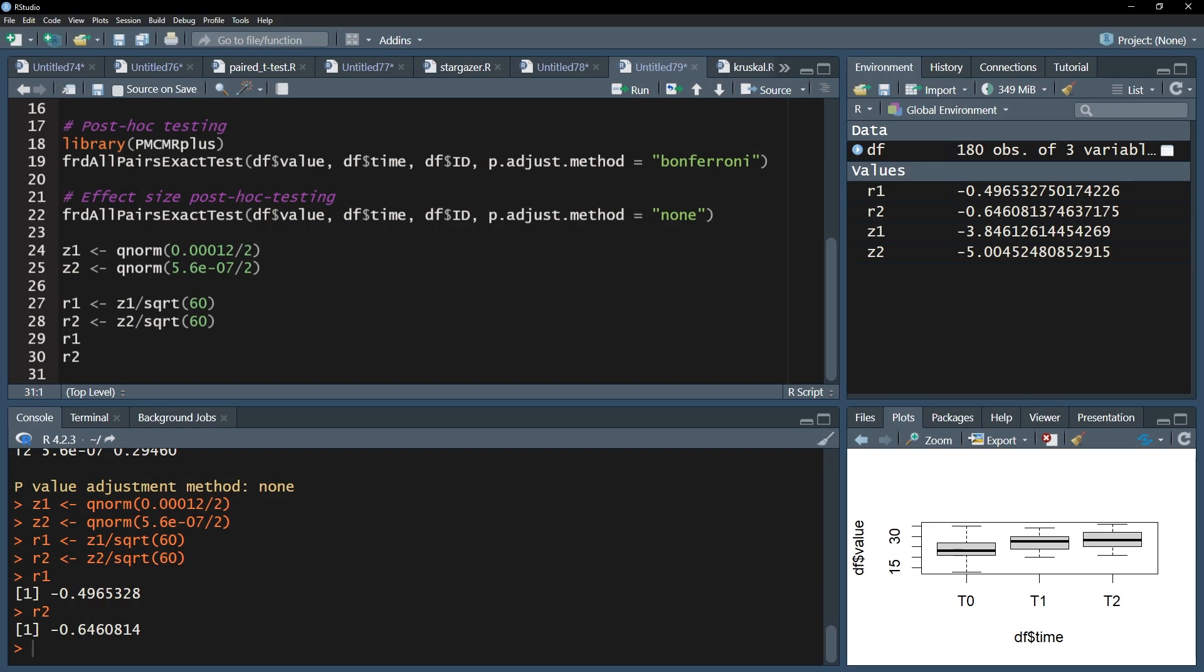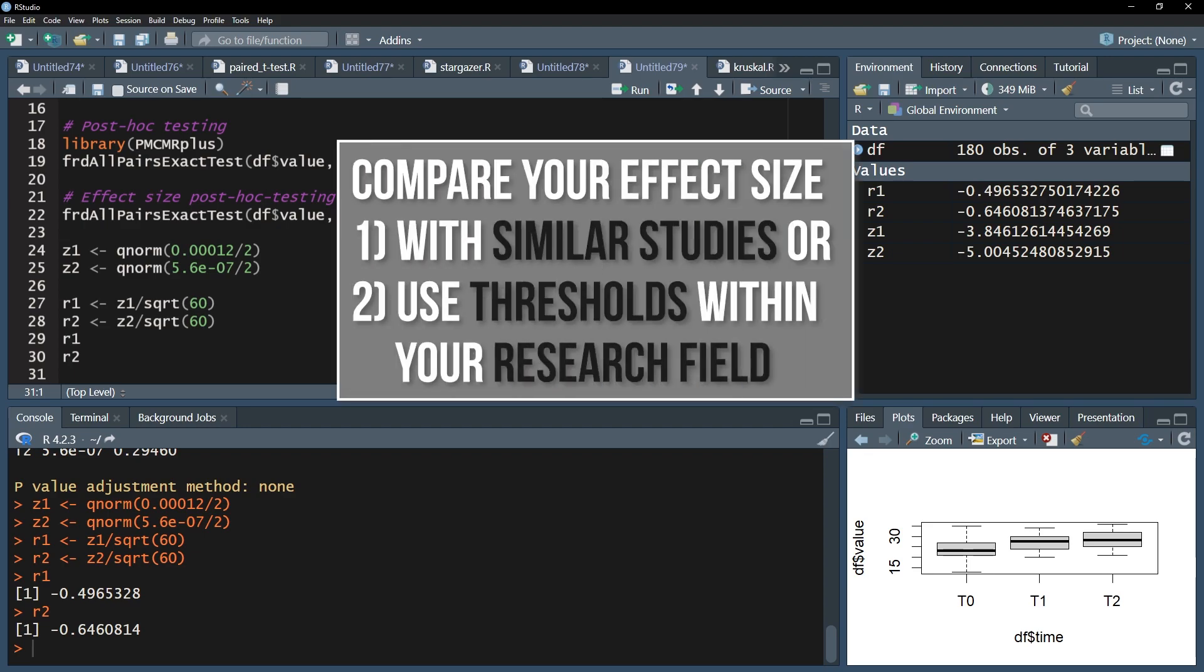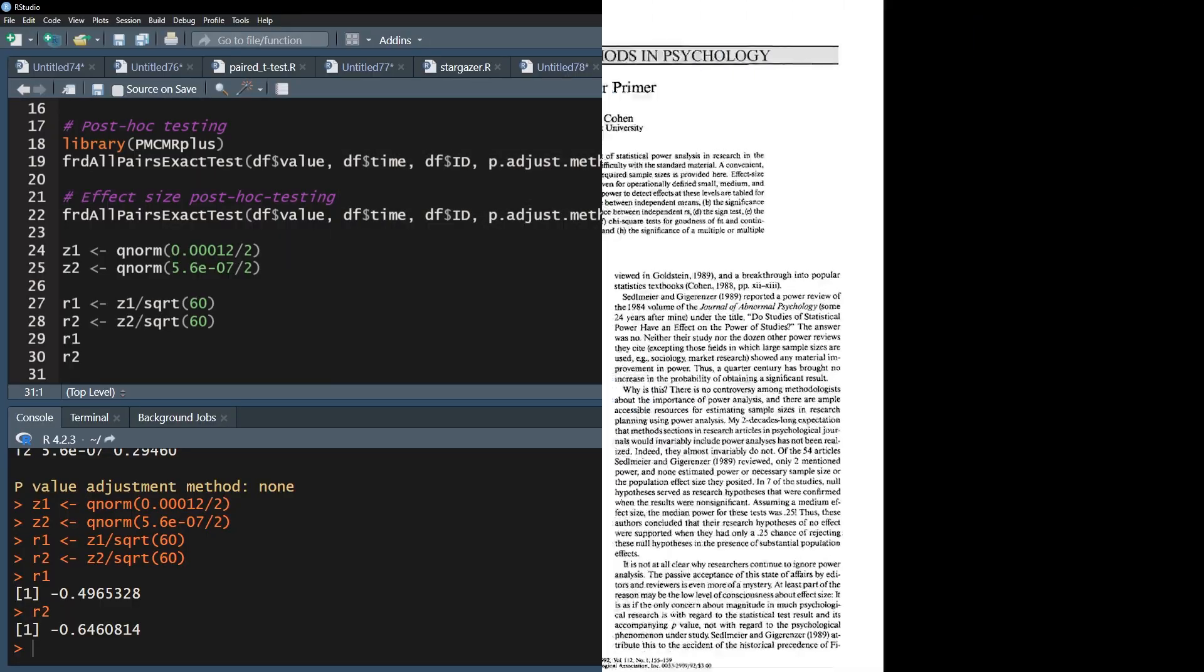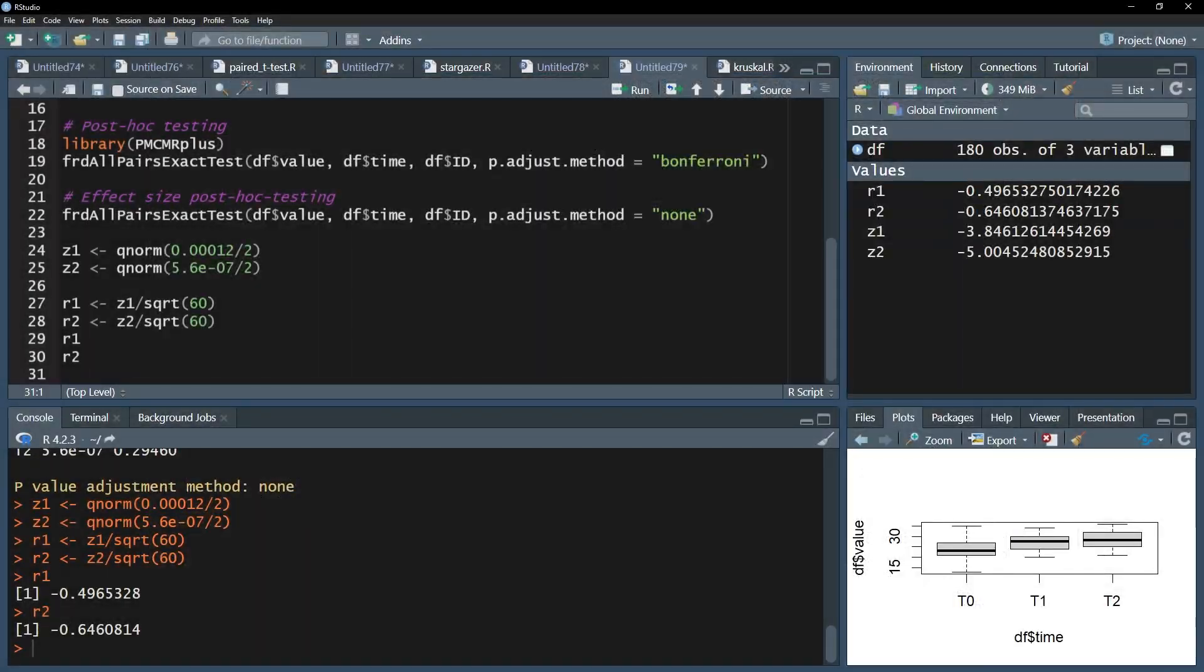However, please check if similar studies in your research field exist and compare your effect size with the given ones, even though there might be none given. If no comparable study exists, you can always refer to Cohen 1992 A Power Primer.